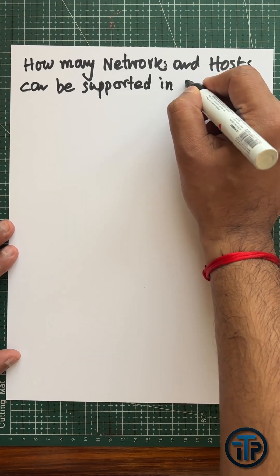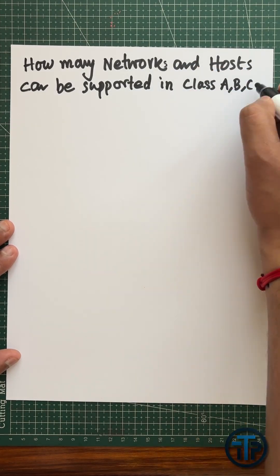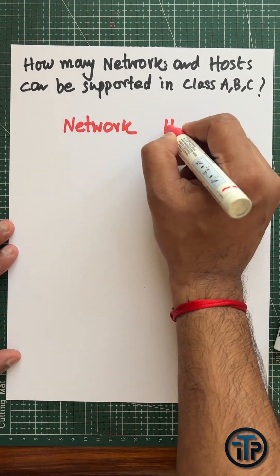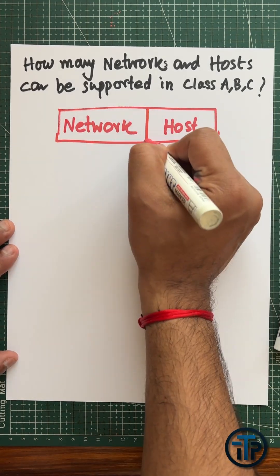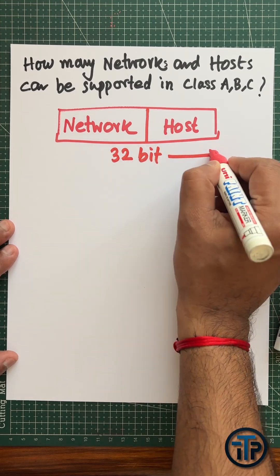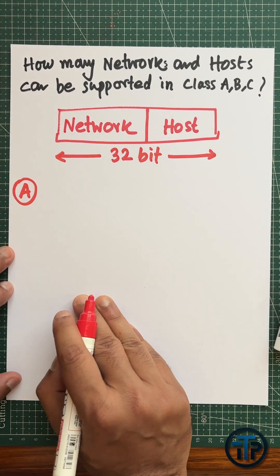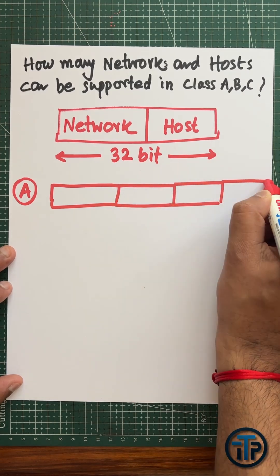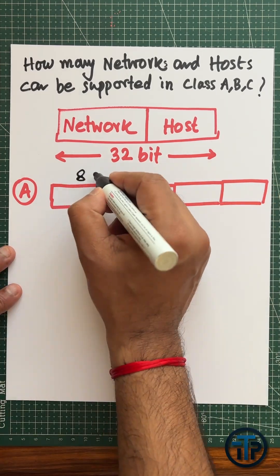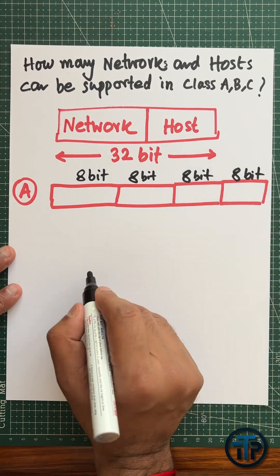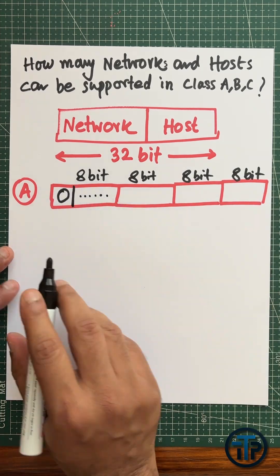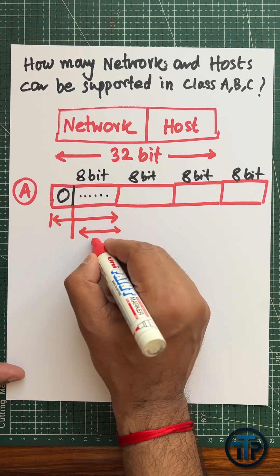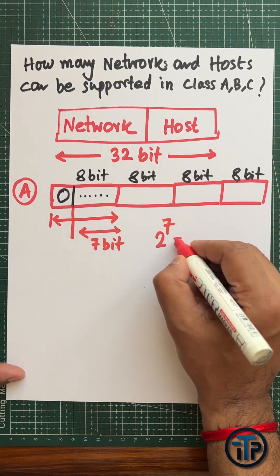How many networks and hosts can be supported in Class A, B, and C? There are two parts of the IP address: the network address and the host address. IPv4 is a 32-bit address. In Class A, the first 8 bits are used for the network part, and the remaining bits are used for the host. The first bit of those 8 bits is zero, which denotes Class A.